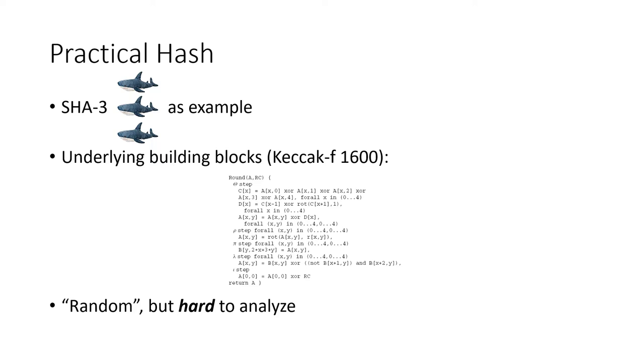Let's start by looking at a famous example of a practical hash function, SHA-3. The key building block is the function in the picture. The function seems very random and achieves pretty good performance in practice. However, it is very hard to analyze even for the most fundamental properties like collision resistance and one-wayness.